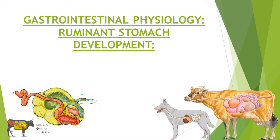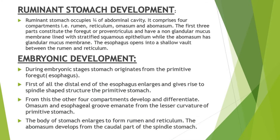Assalamu alaikum, welcome to Vetlek. Today I am going to discuss the stomach development in ruminants. The ruminant stomach actually consists of four compartments: rumen, reticulum, omasum, and abomasum. All these components occupy three-fourths of the abdominal cavity.